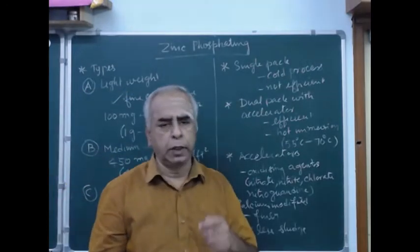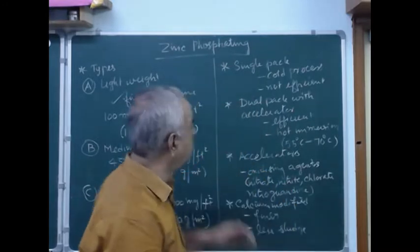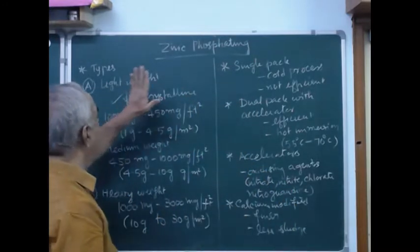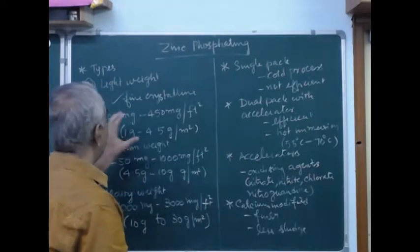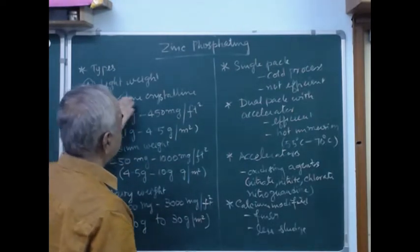We have two types of application: dip type and spray type. In spray type, you'll be able to get lightweight, fine crystalline phosphate crystals. This can also be used for dipping.